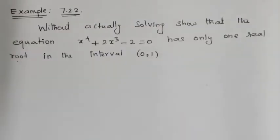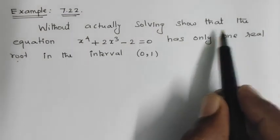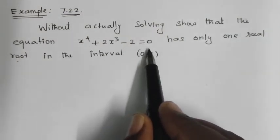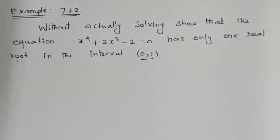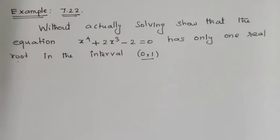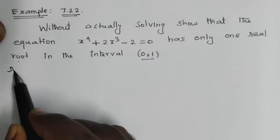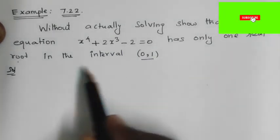Hi students, welcome to my channel. This is Example 22. Without actually solving, show that the equation x⁴ + 2x² - 2 = 0 has only one real root in the interval (0, 1). By the number role, we say there exists at least one real root — that is, the root of the equation.